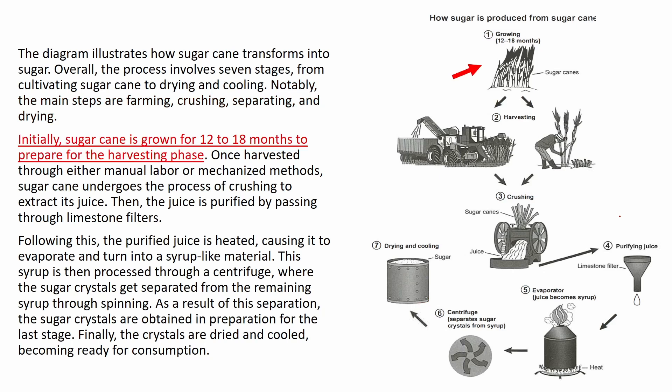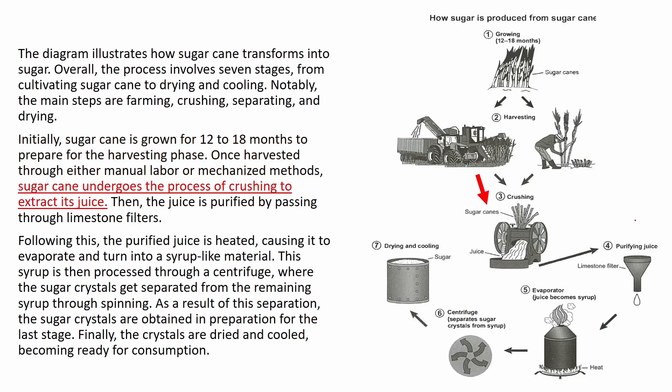Starting from the first stage to the last stage is the logical way. 'Initially, sugarcane is grown for 12 to 18 months to prepare for the harvesting phase. Next, once harvested through either manual labor or mechanized methods, sugarcane undergoes the process of crushing to extract its juice.'